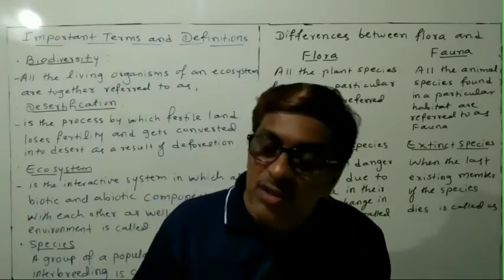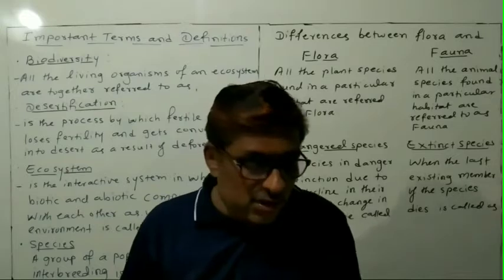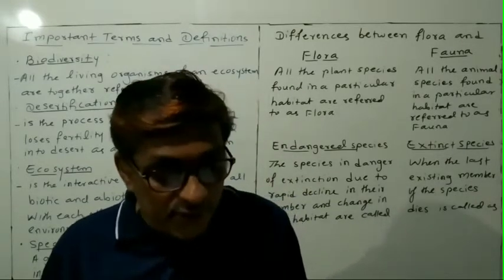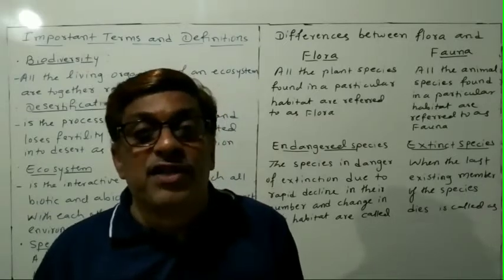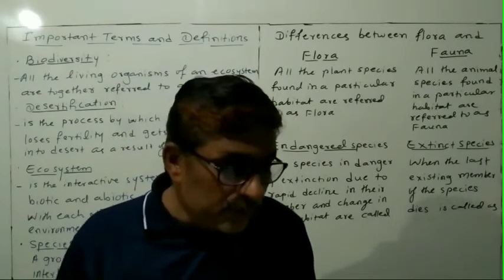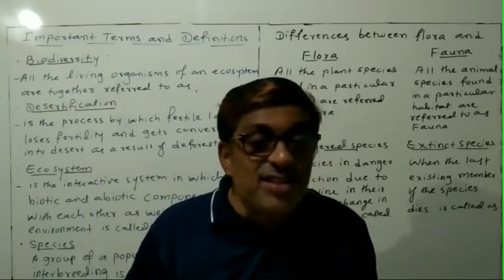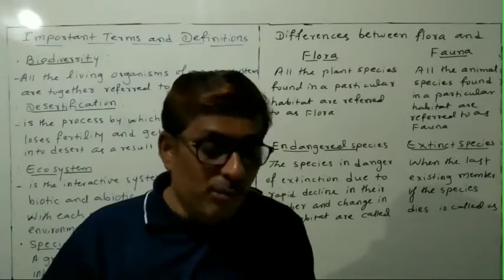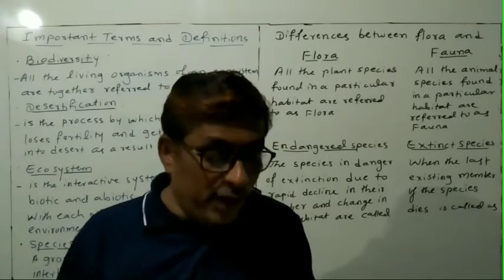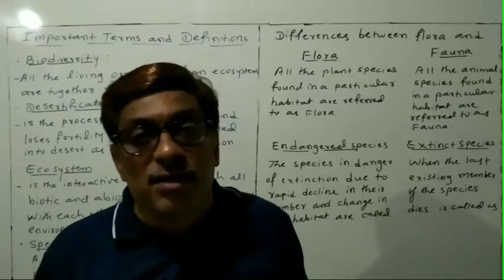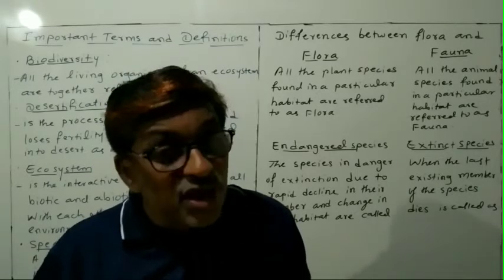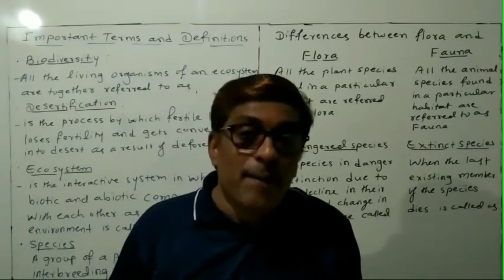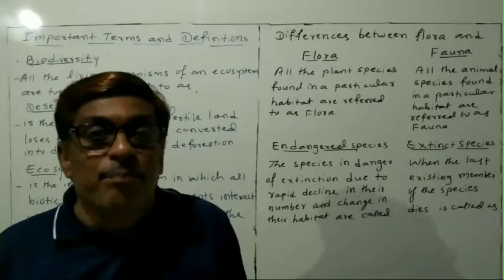And what about fauna? Fauna means all the animal species found in a particular habitat, referred to as fauna. Next one is migration. Migration means movement — the regular or systematic movement of a group of organisms in search of food or shelter is called migration.